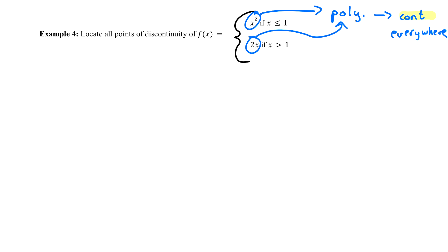The one last thing we need to check is where is this function changing gears — where is it changing how it's defined? It's changing gears at x equals 1: for x less than or equal to 1 it's defined by x squared, and for values greater than 1 it's defined by 2x. So we're really talking about continuity at x equals 1.